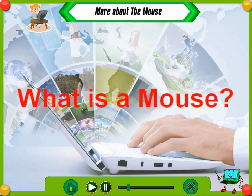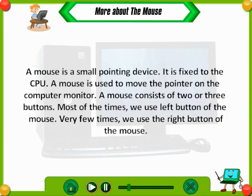What is a mouse? A mouse is a small pointing device. It is fixed to the CPU. A mouse is used to move the pointer on the computer monitor. A mouse consists of two or three buttons.